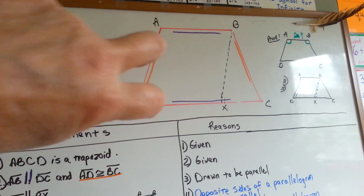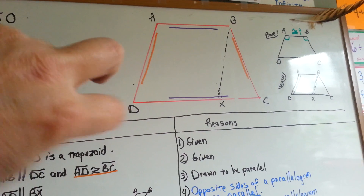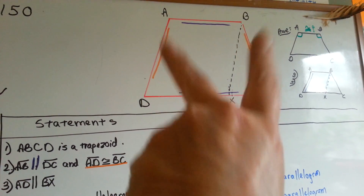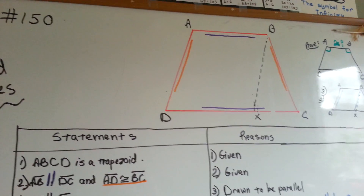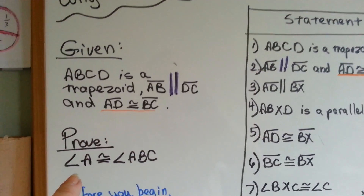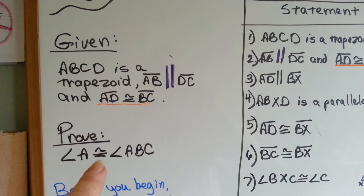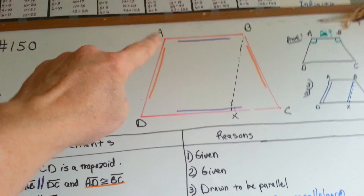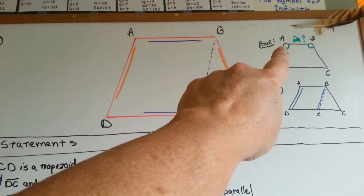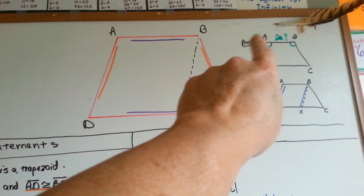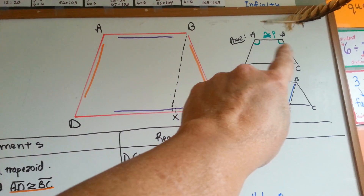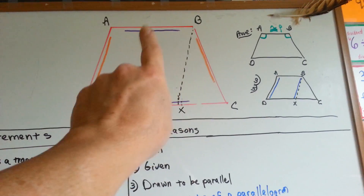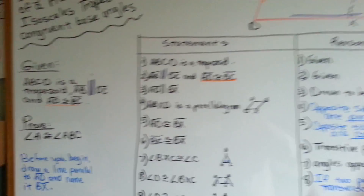I drew purple lines so that you could see the parallel sides, and the congruent ones I drew in orange, so you can see them easier. What we need to prove is that angle A is congruent to angle ABC — these two top angles are congruent. That's what all of this is.